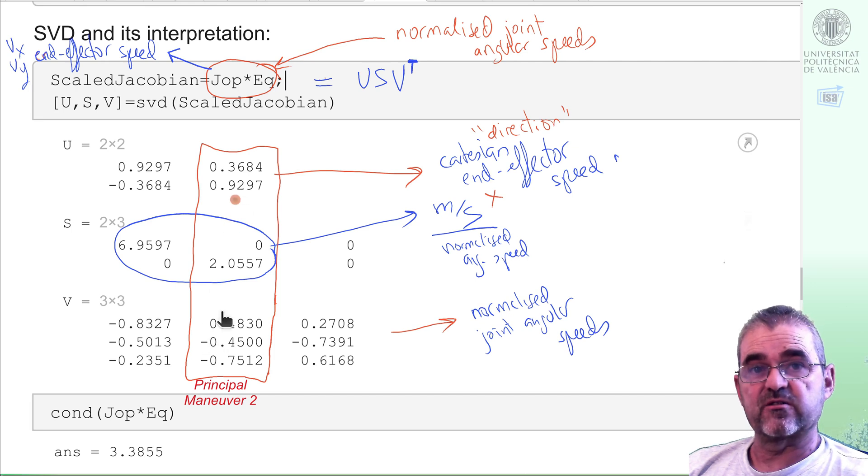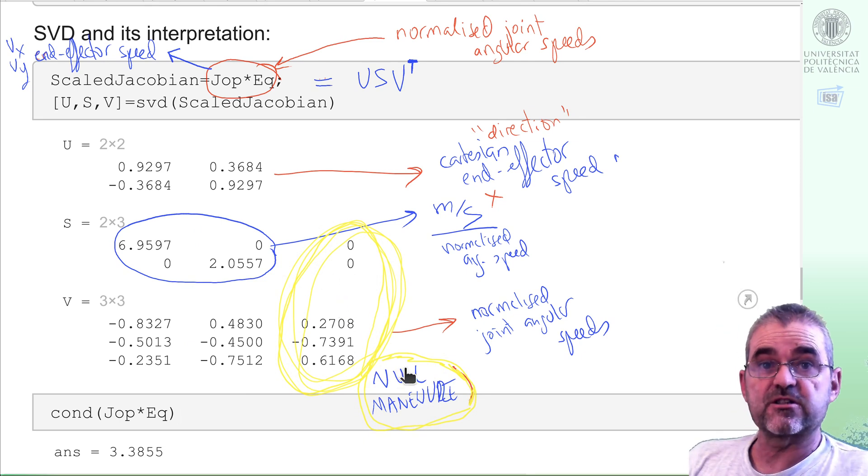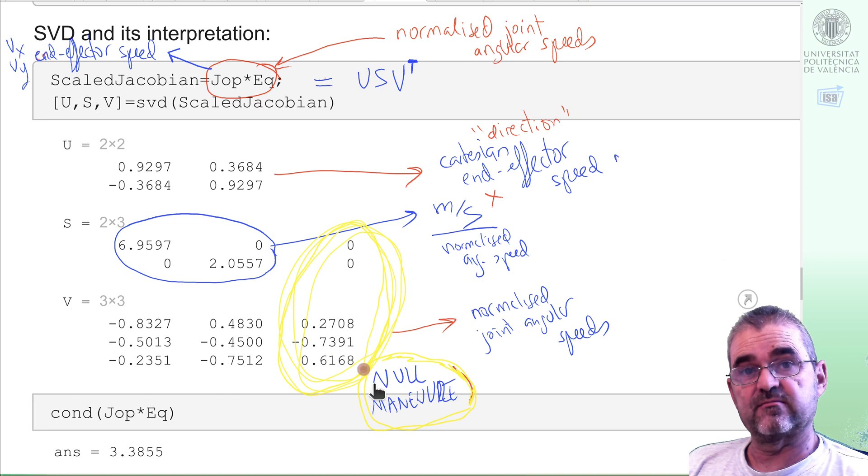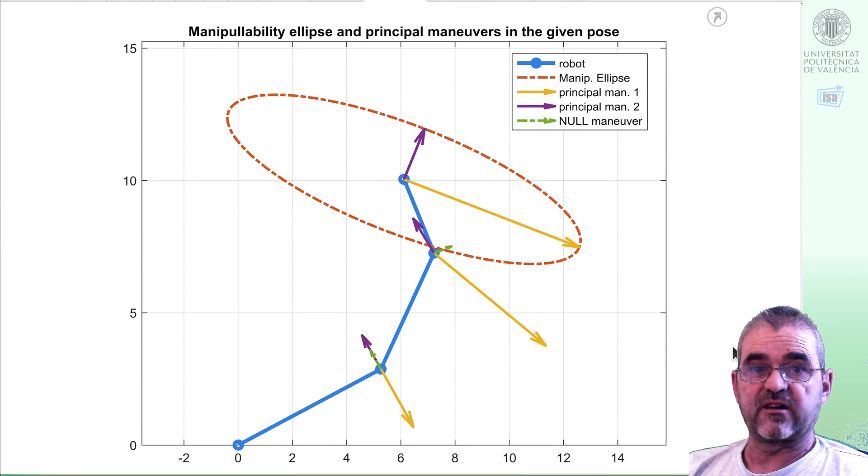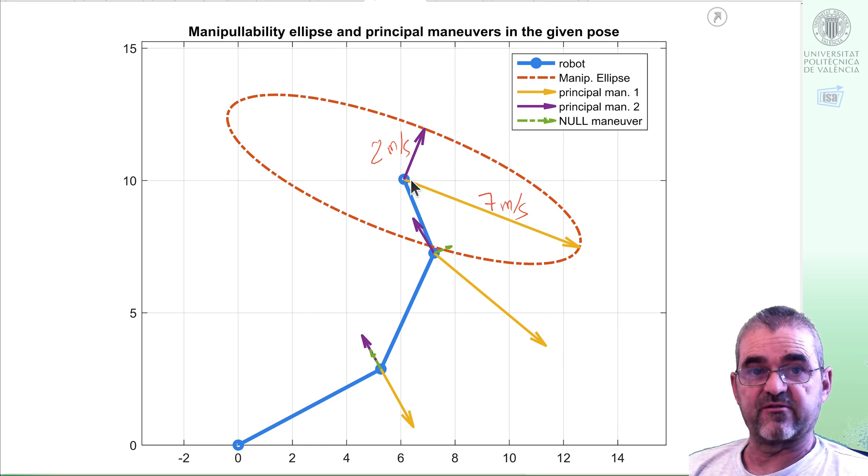We'll have the so-called null maneuver because my manipulator is redundant. I don't care about the orientation of the end effector link, so I have one extra degree of freedom. Moving the angular speeds like this will produce zero speed. So this is zero and it has no direction in my end effector. This is the null maneuver corresponding to the null space of the Jacobian. These principal maneuvers will have a graphical representation like this with some seven meters per second high gain maneuver, some two meters per second low gain maneuver, and some null maneuver. The detail on how this figure is obtained will be left for a sequel video.